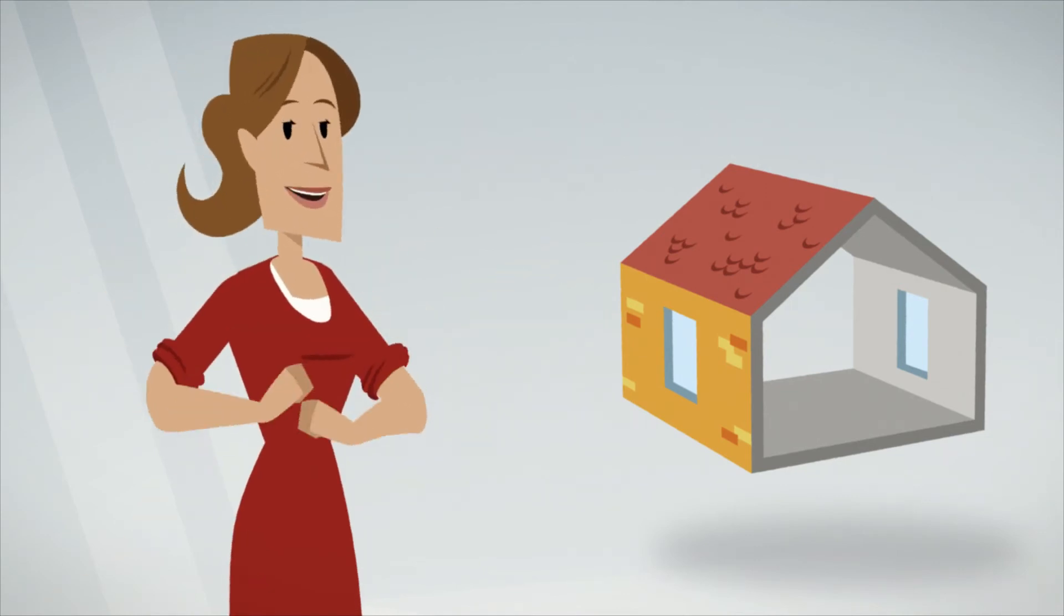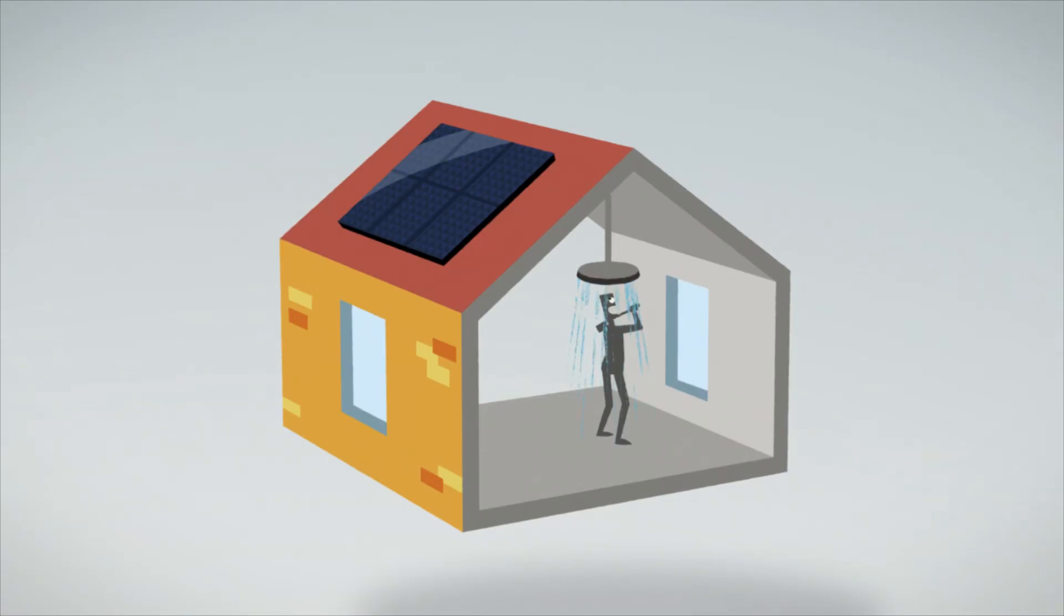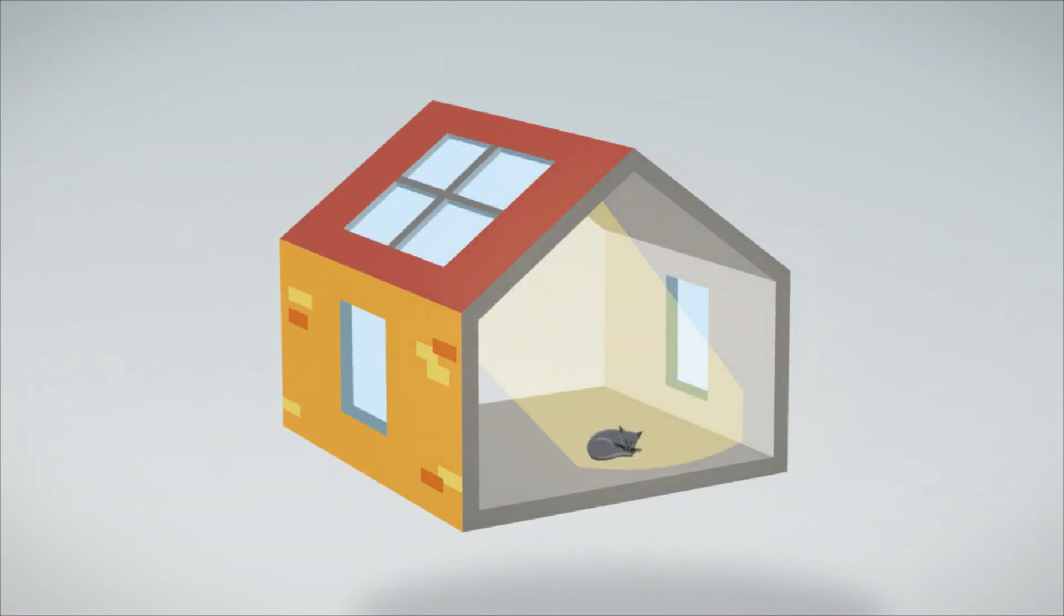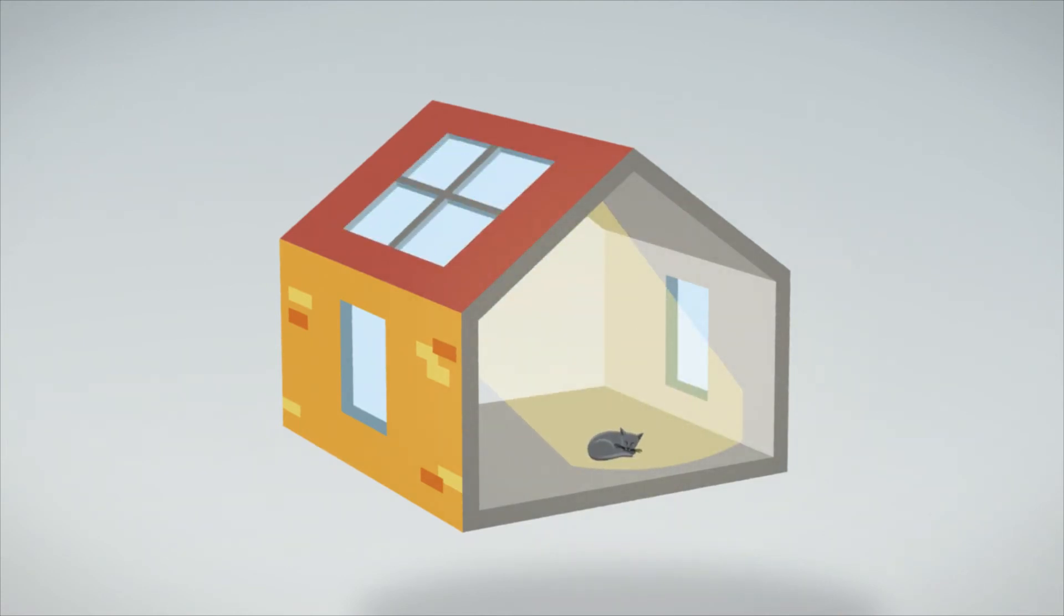To use the sun's energy directly in your own home, there are several very simple systems available: solar collectors, photovoltaic solar panels, and perhaps the simplest solution is to let your windows help do the work for you.